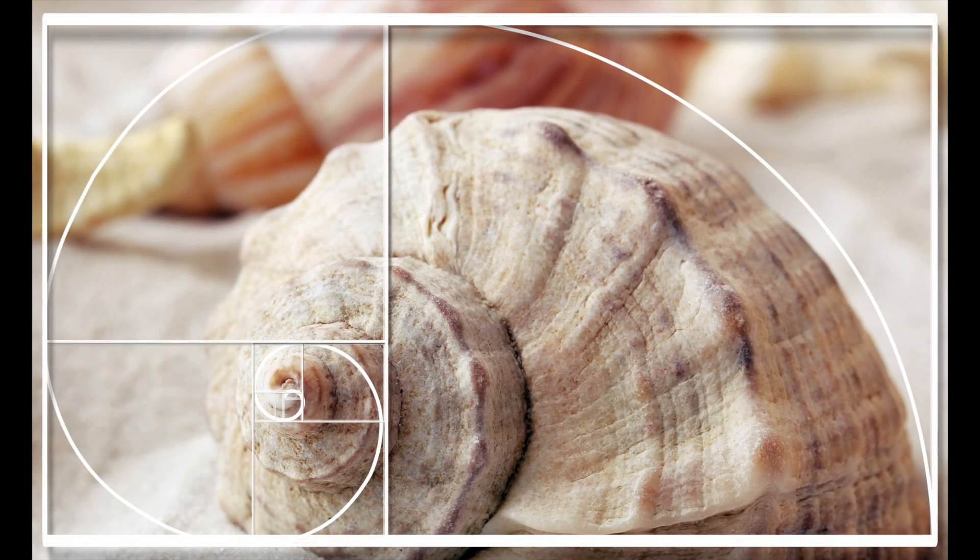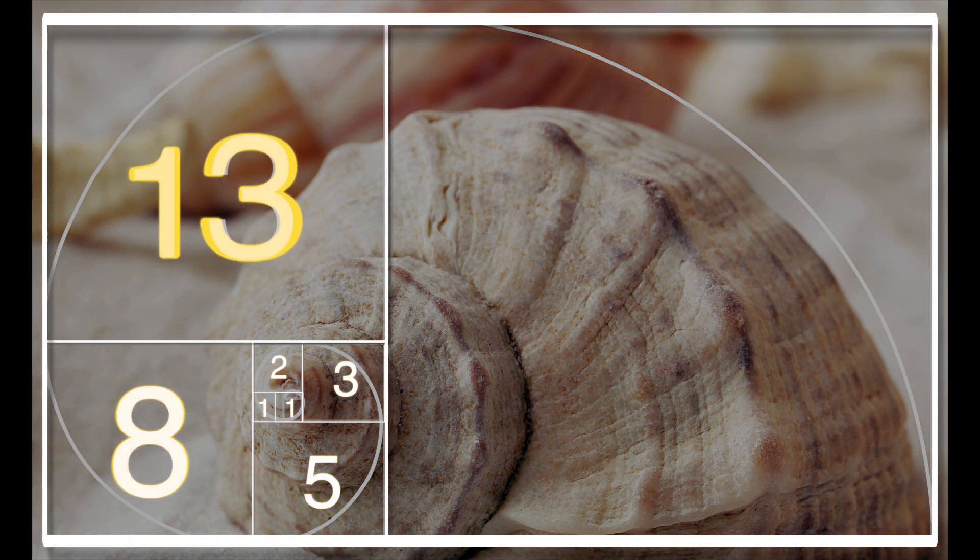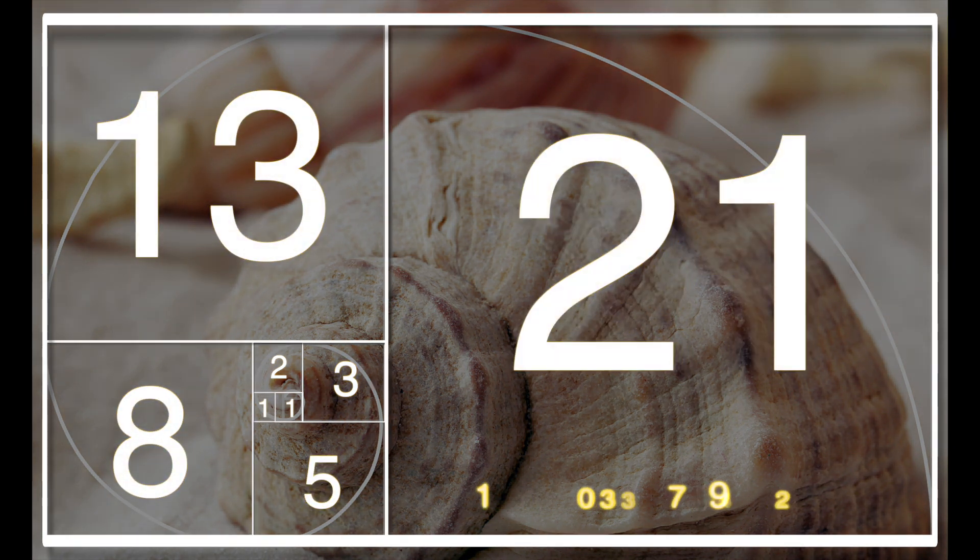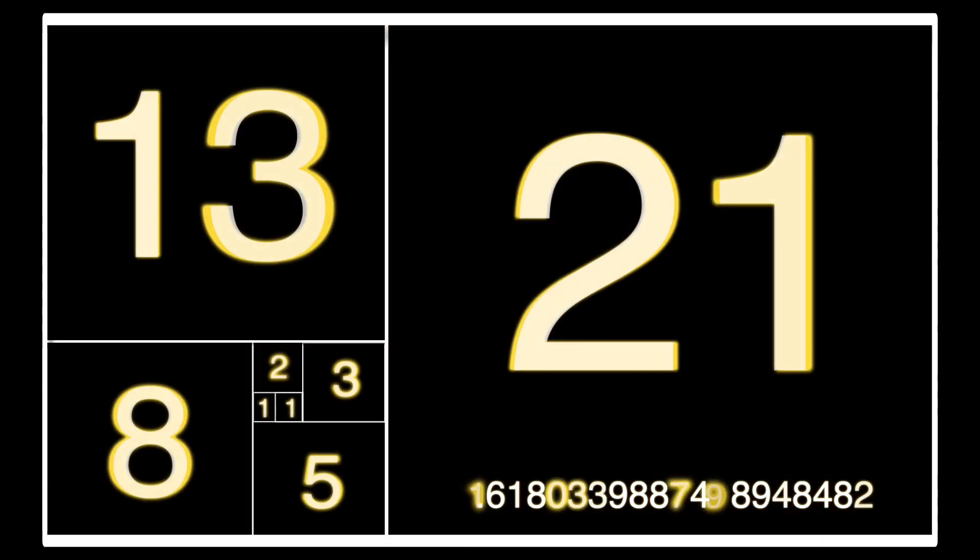The Fibonacci sequence is tightly connected to what's now known as the golden ratio. The ratio of the numbers in the sequence, as the sequence goes to infinity, approaches the golden number, which is 1.6180339887498948482.